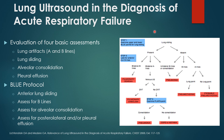Lung ultrasound in the diagnosis of acute respiratory failure was discussed by Lichtenstein and colleagues in Chest about 12 years ago. Lung ultrasound has been around since about 1993–1994, especially in the emergency department. The four basic assessments are: lung artifacts (A and B lines), sliding — which gives a good idea about pneumothorax — pleural effusion as an anechoic region in the subphrenic area above the diaphragm, and the BLUE protocol, which evaluates lung sliding first, then A and B lines, ruling out pneumonia, and can even extend to PE using other POCUS techniques.